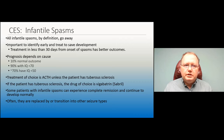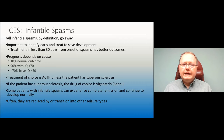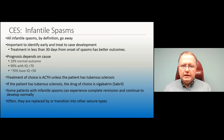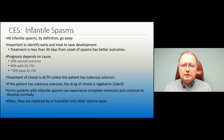If we can treat infantile spasms and stop them within 30 days, those individuals tend to have better outcomes. However, overall prognosis is very poor for long-term development: only about 10% will have an IQ greater than 70, about 90% will have IQ less than 70, and about 70% will have IQ less than 50. Treatment of choice is ACTH, unless the patient has tuberous sclerosis — so we always do a thorough skin exam and Wood's lamp examination. If tuberous sclerosis is present, the drug of choice is vigabatrin.